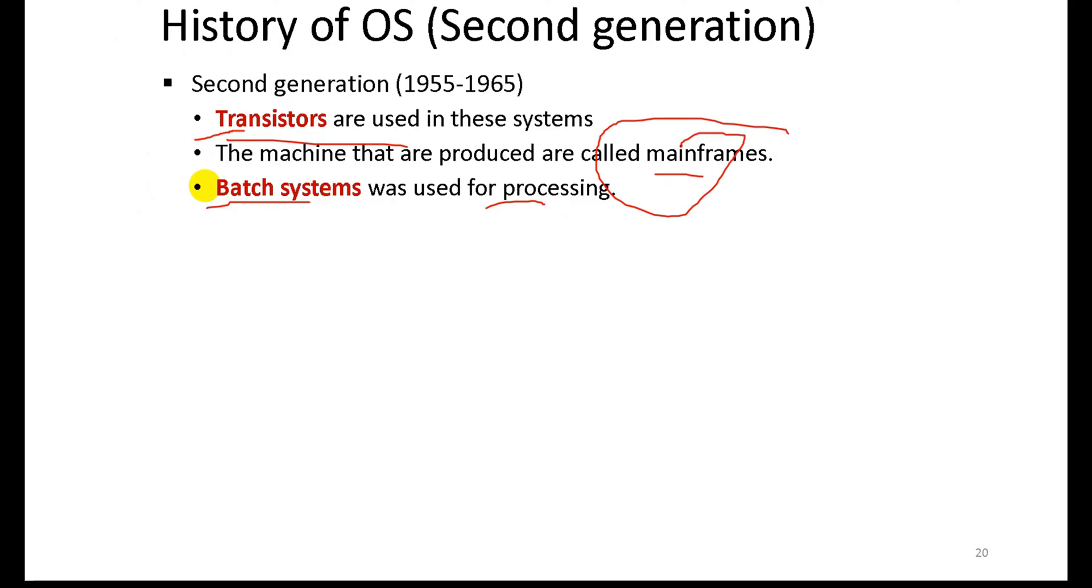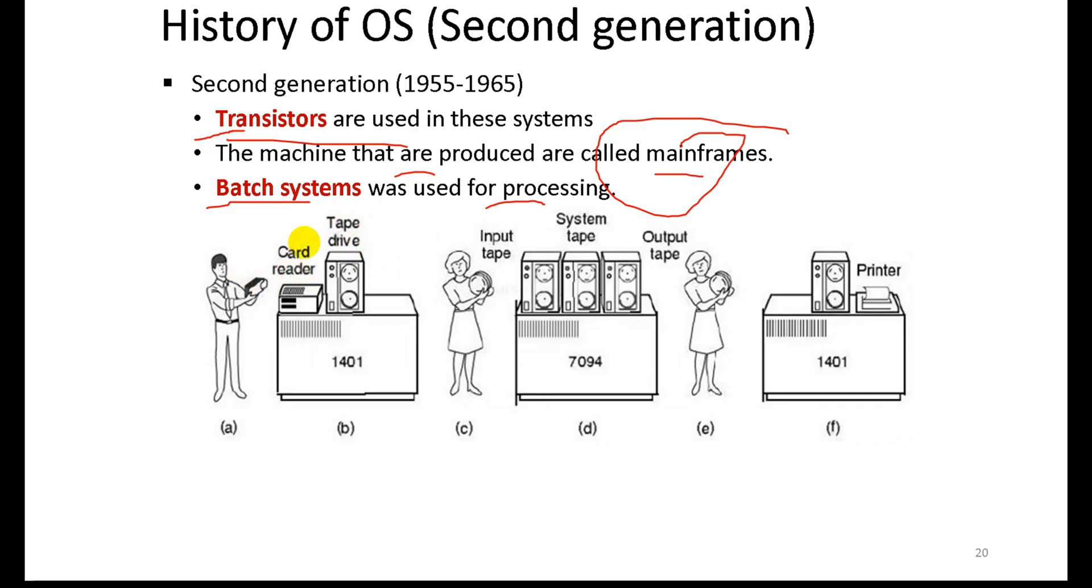Multiple users were supported in this system. The first generation had single users and single problem solutions. The transistor replaced vacuum tubes and plug boards, providing higher speed and flexibility. The second generation used electronic devices.